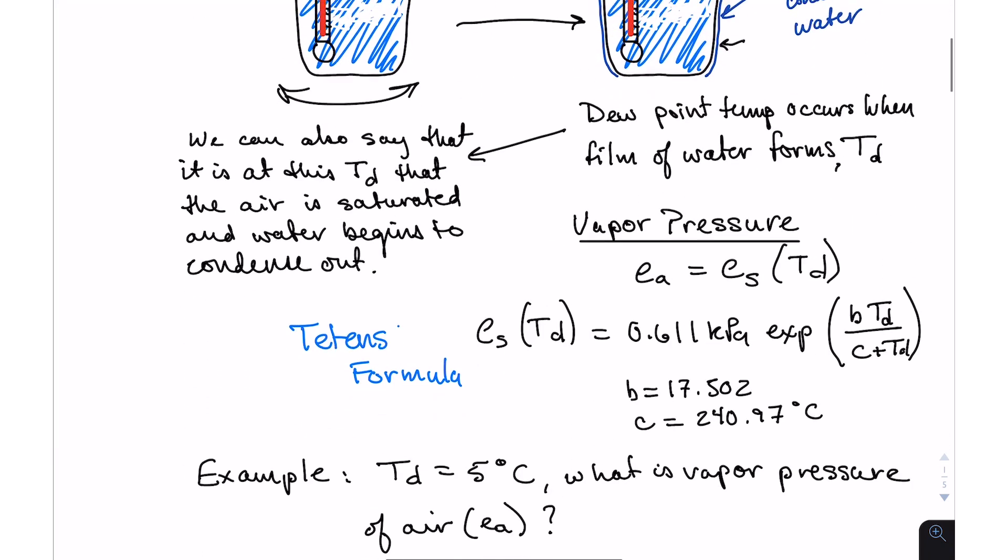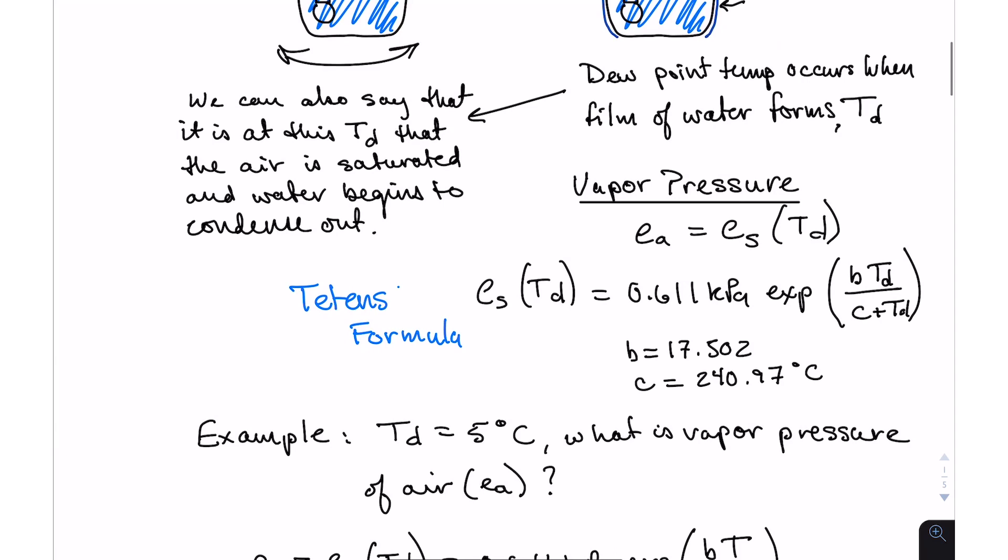We can say that the dew point temperature is the point at which the air is saturated and water begins to condense out. We call this our TD or dew point temperature. The beautiful thing about dew point temperature is that if you know this value, you can very easily calculate your vapor pressure or even go on to calculating relative humidity, as I talked about in another lecture.